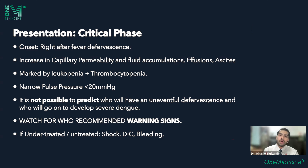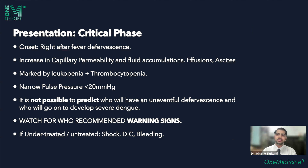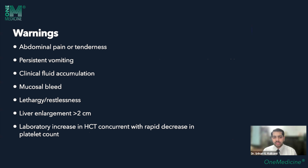WHO recommends certain warning signs — these are very important. If there is one slide to understand from this entire discussion, it would be the warning signs. Patients who are undertreated or untreated can develop complications including shock, DIC, and bleeding. The warning signs include: abdominal pain or tenderness, persistent or intractable vomiting even after antiemetics, and clinical fluid accumulation such as pleural effusion, pericardial effusion, or ascites leading to breathlessness and diffuse abdominal pain.